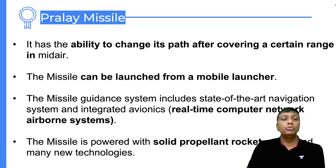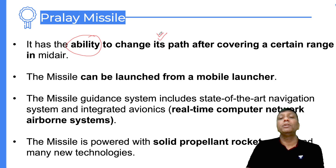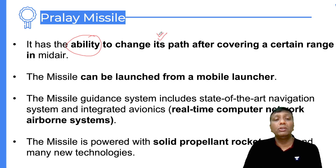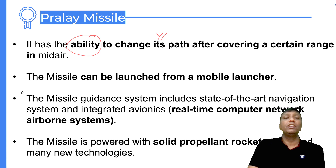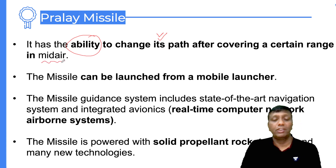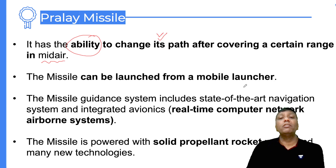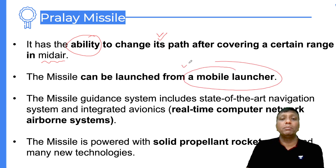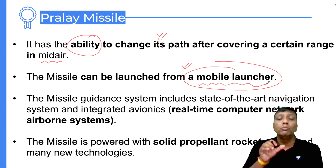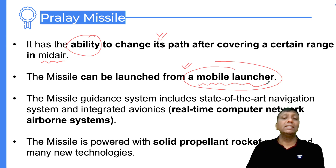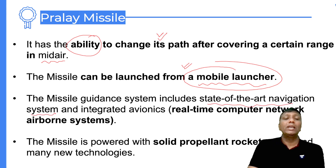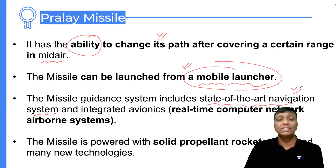Another specific feature that makes the Pralay missile very unique is its ability to change its path during launch. In mid-air, it can change its own trajectory, which is very interesting. Additionally, launching can be done from moving vehicles, which is why it is called a mobile launcher. The missile guidance uses a state-of-the-art navigation system with very sophisticated location-specific characteristics, which is the reason it can be used in an interceptor-type role to defend against incoming missiles.